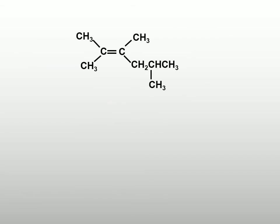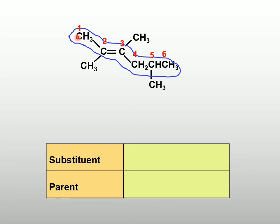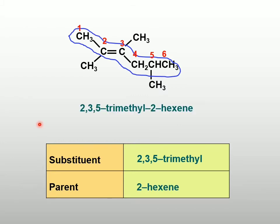Let's try another example. First, we find the longest parent chain — here the longest parent chain is 6 carbons: 1, 2, 3, 4, 5, 6. Next, we give numbering to the parent. The numbering starts from the left, which gives the double bond a lower number. So the parent will be 2-hexene, and I have 3 branches — methyl groups at carbon 2, 3, and 5. So the substituents will be 2,3,5-trimethyl and the parent is 2-hexene. The IUPAC name will be 2,3,5-trimethyl-2-hexene.